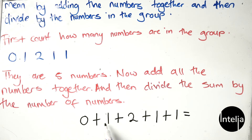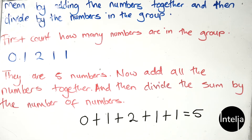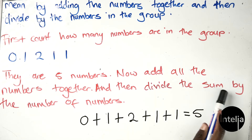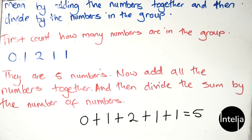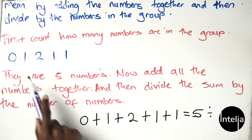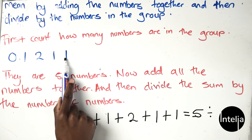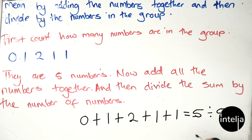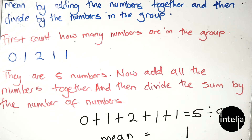Zero plus one is one, one plus two is three, three plus one is four, four plus one is five. We write our five here. Now divide the sum by the number of numbers: five divided by five equals one. So our mean equals one.